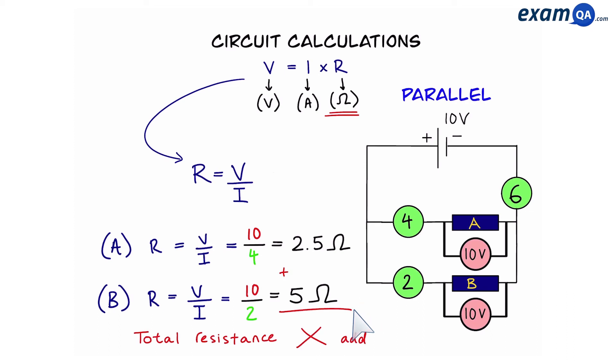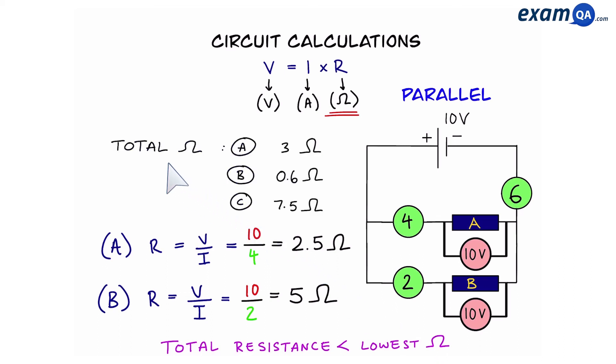We do not add them together like we did in series circuits. For parallel the rule is a little bit different. For parallel circuits the total resistance is going to be smaller than the lowest resistance. So let's talk about why this happens. Let's say they give you three options. What is the total resistance for this particular circuit? Is it 3 ohms? Is it 0.6 ohms? Or is it 7.5 ohms? Well our lowest resistance is 2.5 from the two components. That means the answer has to be 0.6 because this is the only one from the three options that is lower than the lowest.